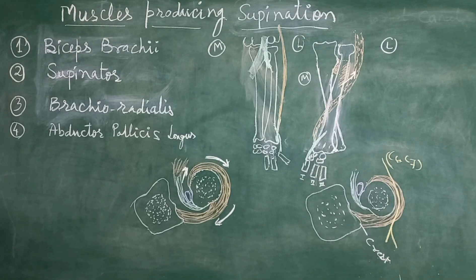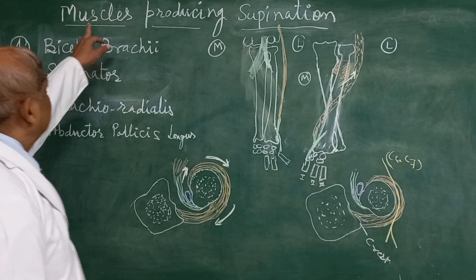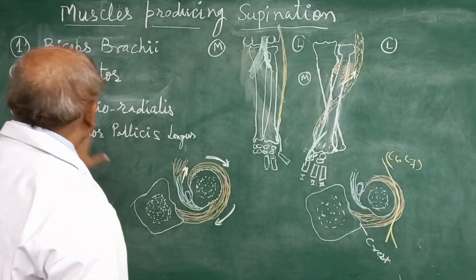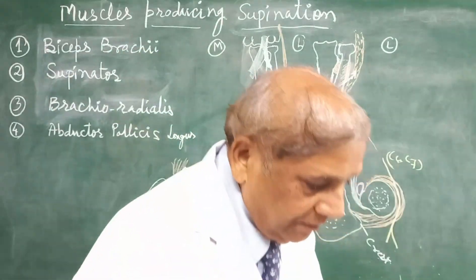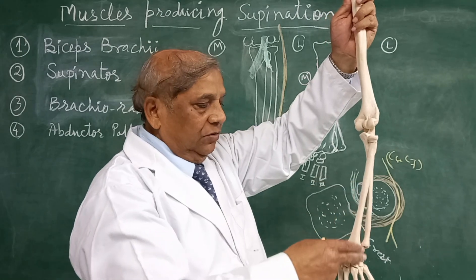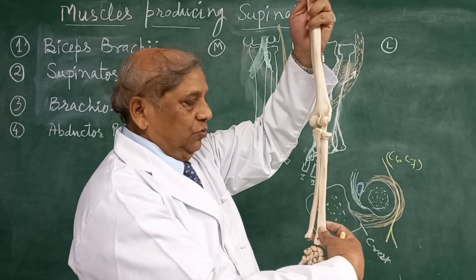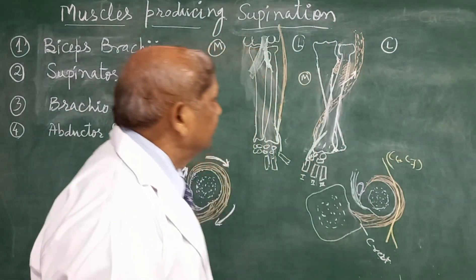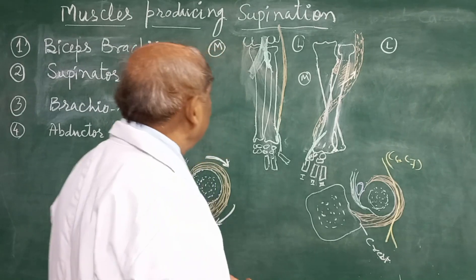Welcome back students. This is in continuation to the pronation movement; now we are on the supination movement. These are the muscles which will produce the supination of the forearm. From the pronation position, where the radius is crossing the ulna in front and the dorsal surface of the hand is seen, this video shows how supination takes place from pronation.